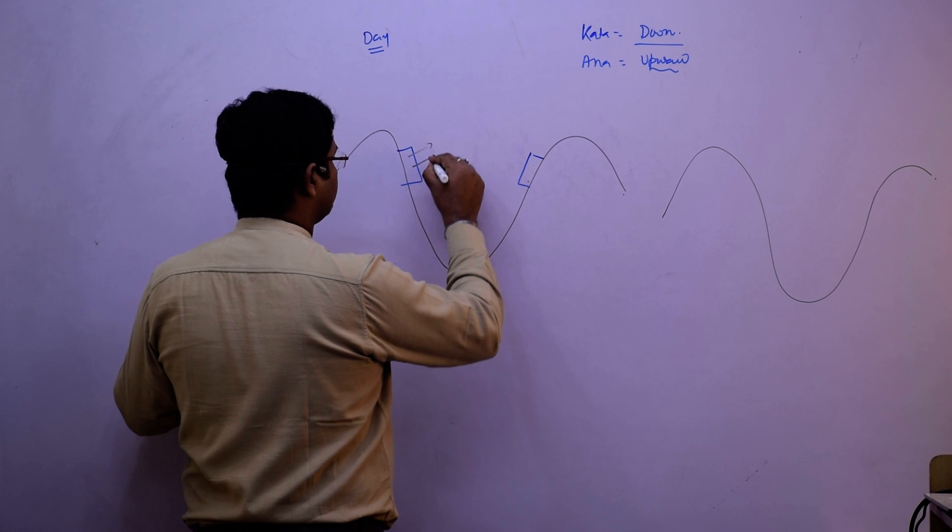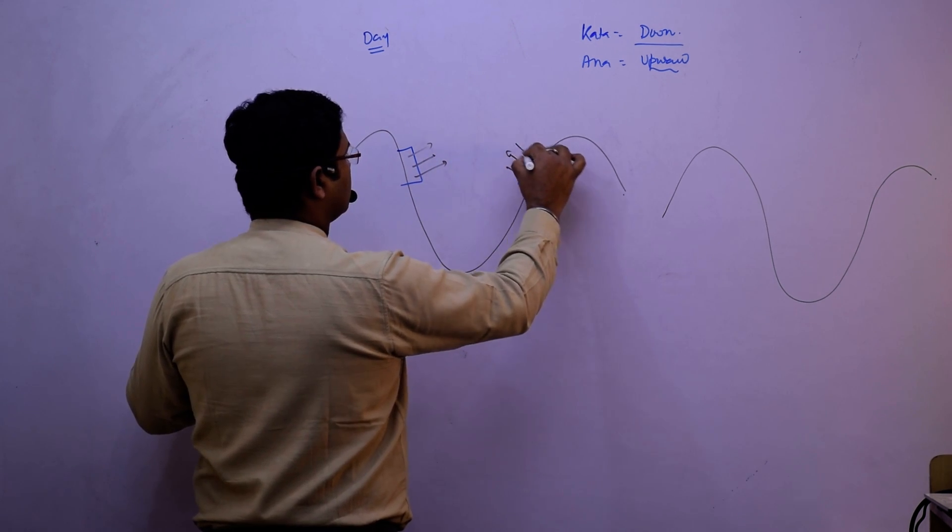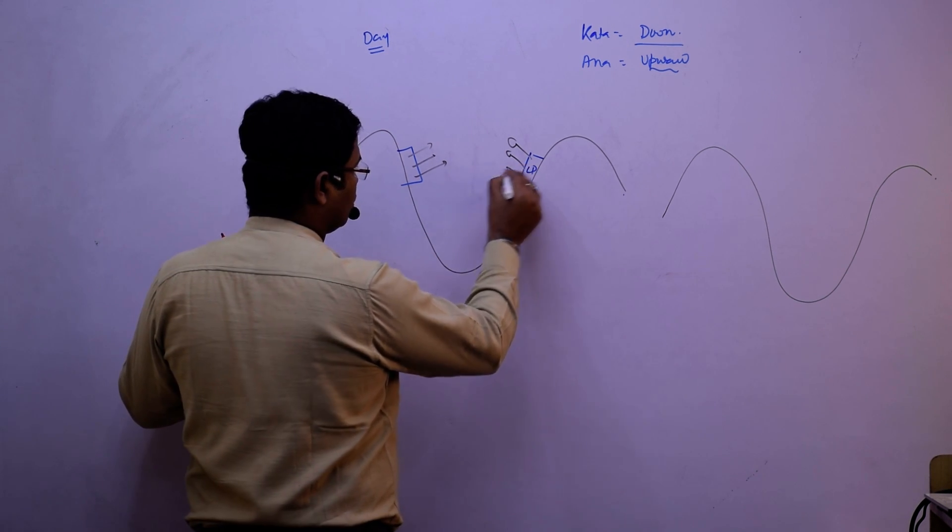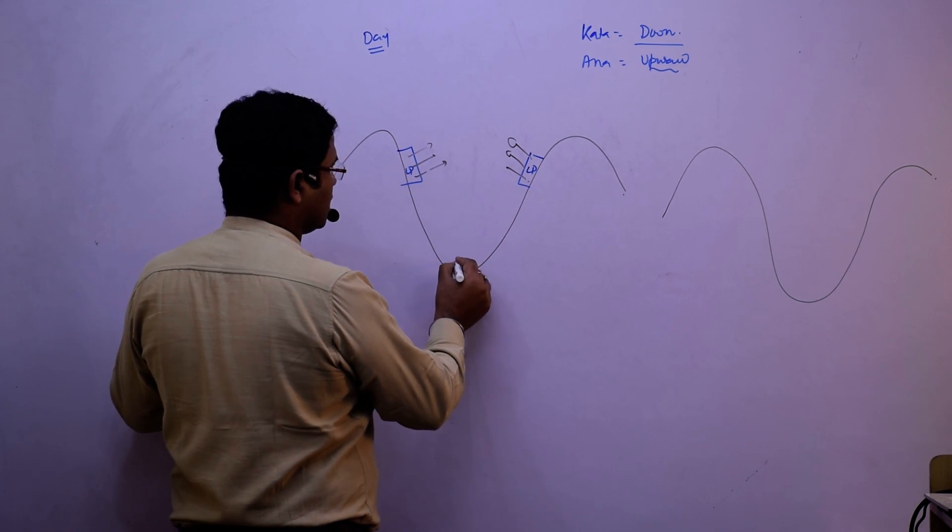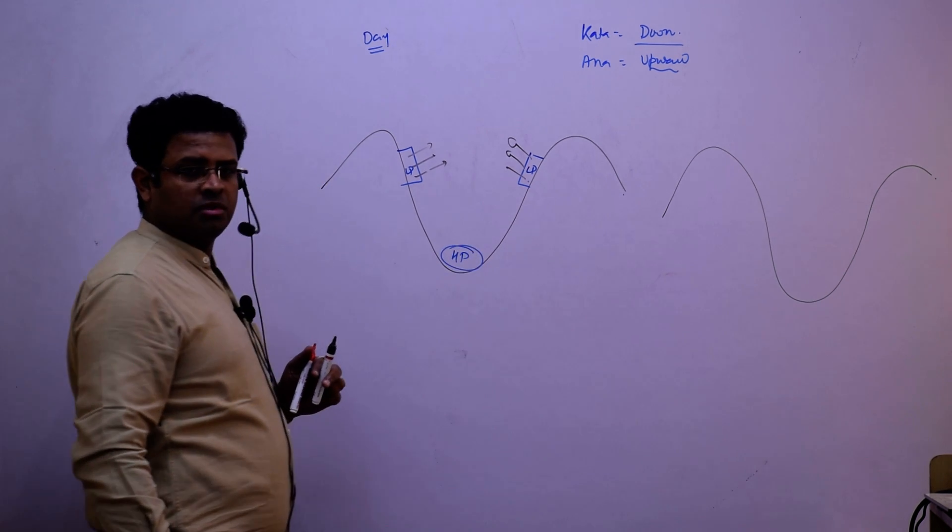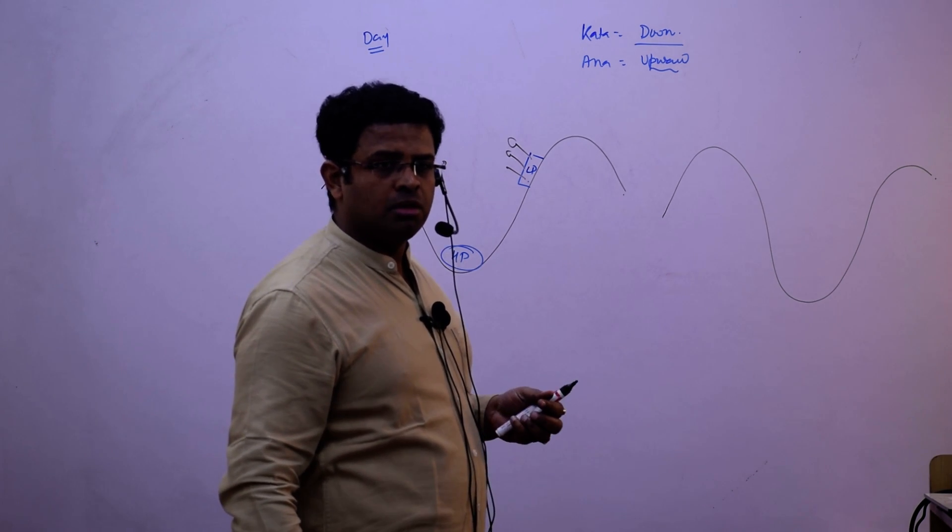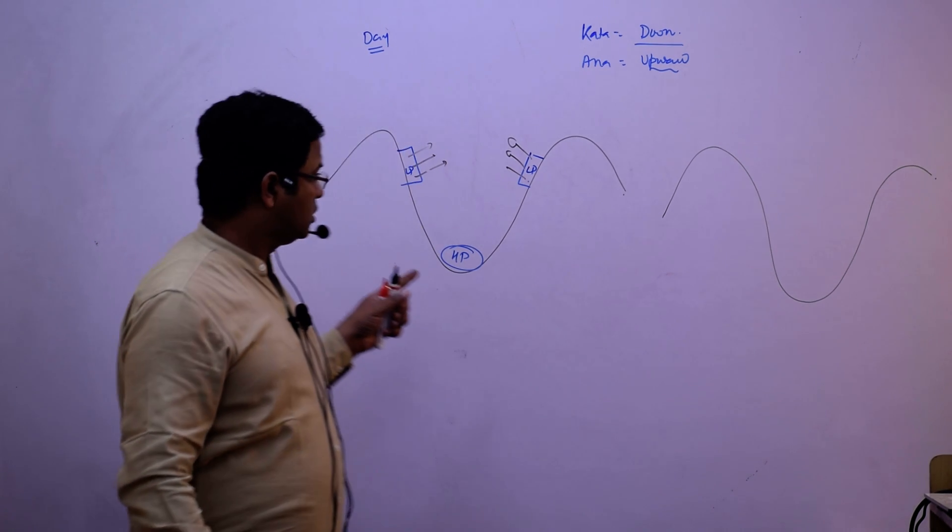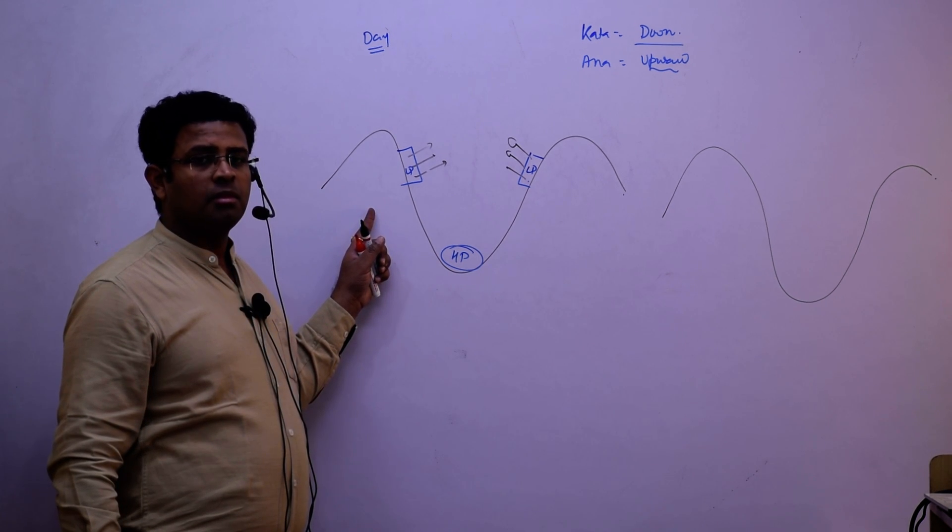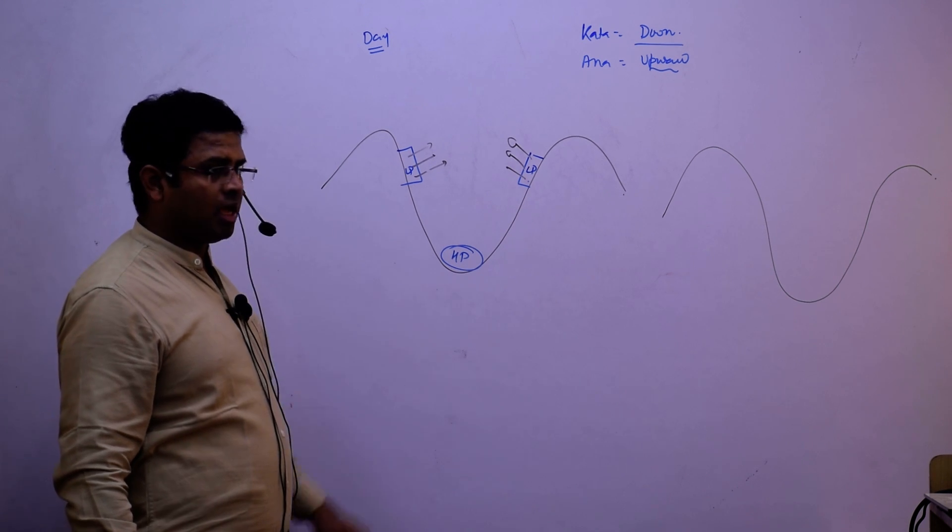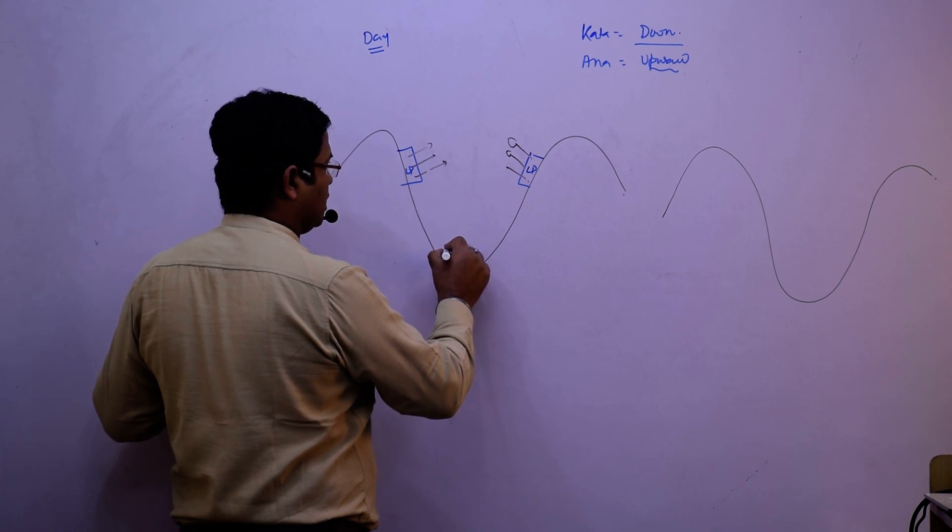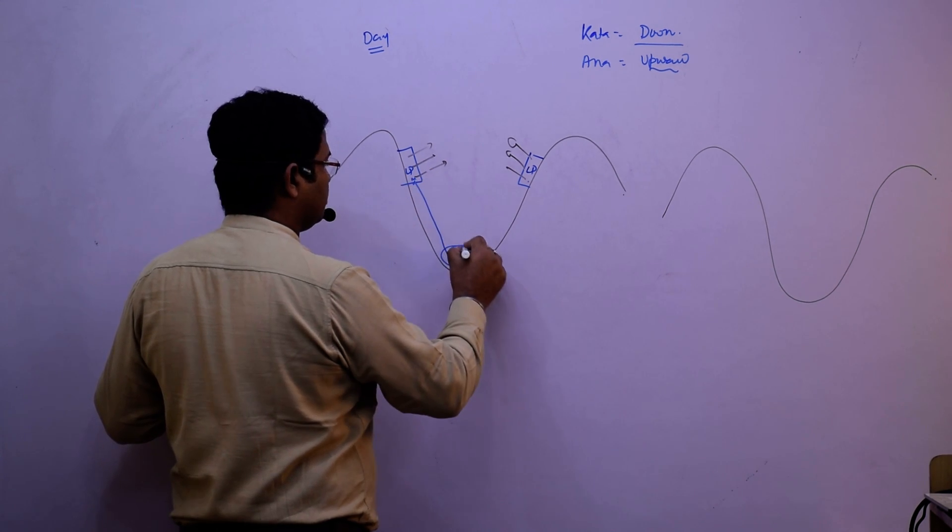So what will happen? The warm wind will move upward. What will create here? Low pressure. And is it comparatively, what will happen here? Tell me. High pressure. The mountainous slopes will receive more heat compared to valley. And what will happen? If it is getting more heat, then the wind will start moving to fill up this.